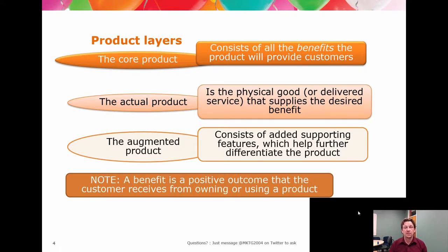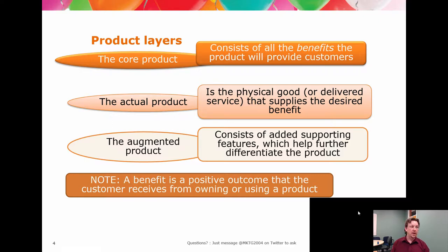The actual product creates the desired benefit, but it's not the desired benefit itself. To illustrate — take common table salt. Its actual product is its chemical composition. But you can use it for cleaning, and you can use it for flavoring. So you have two separate core products from the same actual product: enhancing flavor and cleaning. Two different core products where the actual product does not change.